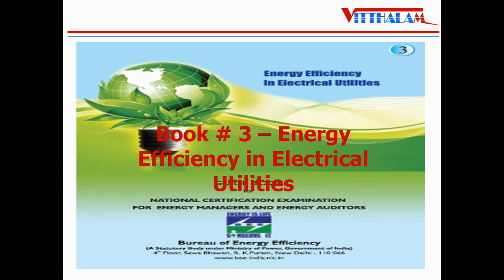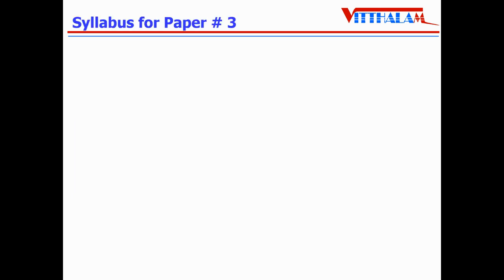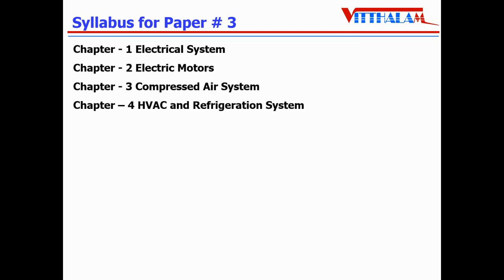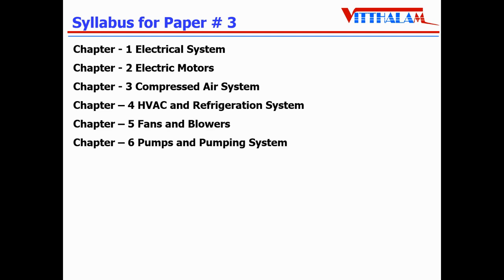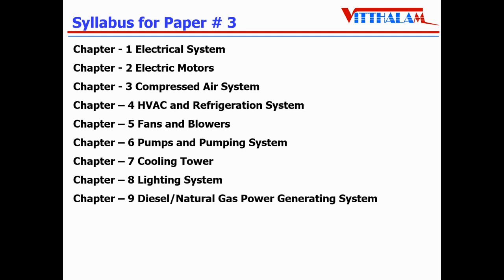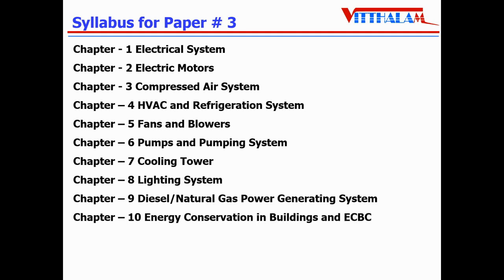Paper number 3, book number 3, is Energy Efficiency in Electrical Utilities. Topics covered include: electrical systems, electric motors, compressor system, HVAC and refrigeration system, fans and blowers, pumps and pumping system, cooling tower, lighting system, BGSAT, energy conservation in buildings, and ECBC.